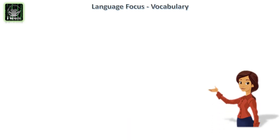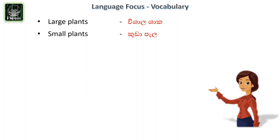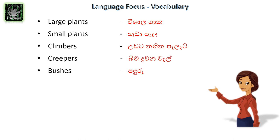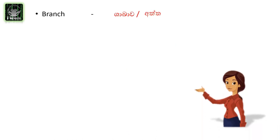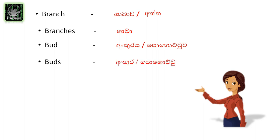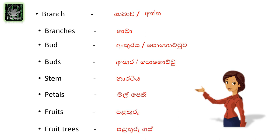First of all, let's get to know the vocabulary. Large plants - vishala shaka. Small plants - kuda pala. Climbers - udatanagina palati. Creepers - bimaduana. Bushes - panduru. Flowers - mall. Leaf - kolaya. Leaves - patra. Roots - mul. Trunk - kanda. Branch - shakawa. Branches - shaka. Bud - pohottua. Buds - pohottu. Stem - naratiya. Petals - malpethi. Fruits - palaturu. Fruit trees - palaturu gas.